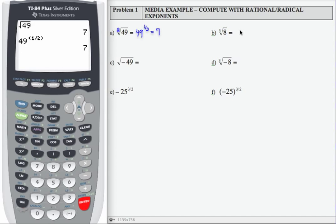For part b, cube root of 8, what times itself 3 times gives me 8. Well, cube root of 8 is the same also as 8 to the 1 third. That's the rational notation. This is the radical notation. And what times itself 3 times gives me 8. That is the number 2.